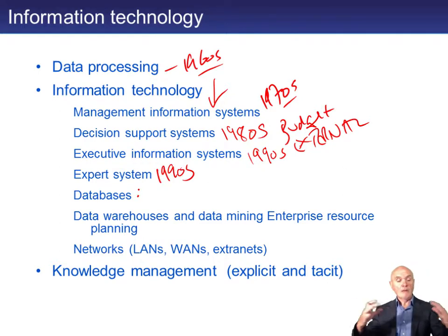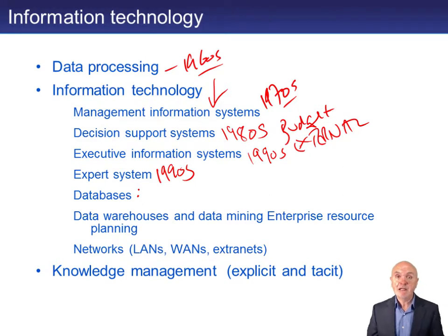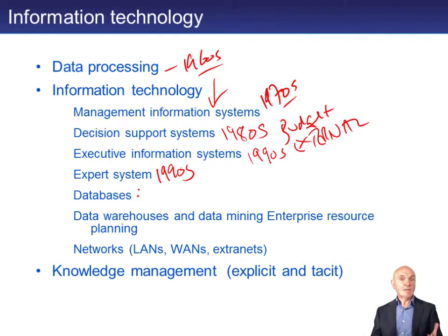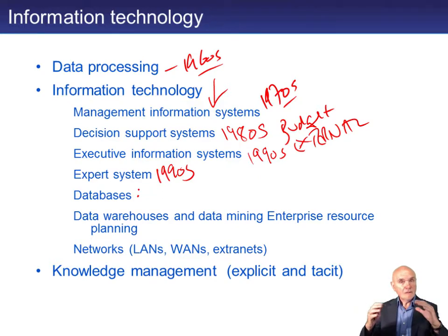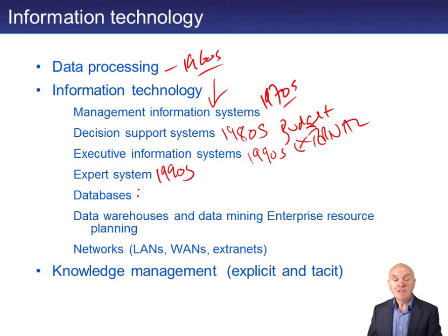Databases hold all the information basically in one place and give different views of that data to different people. For example, with a personnel database, wages and salaries need to see wages and tax information, but they don't need to see staff appraisals. The database is set up so all the data is held once in one place — everyone sees the same data, but only the data they need for their job.